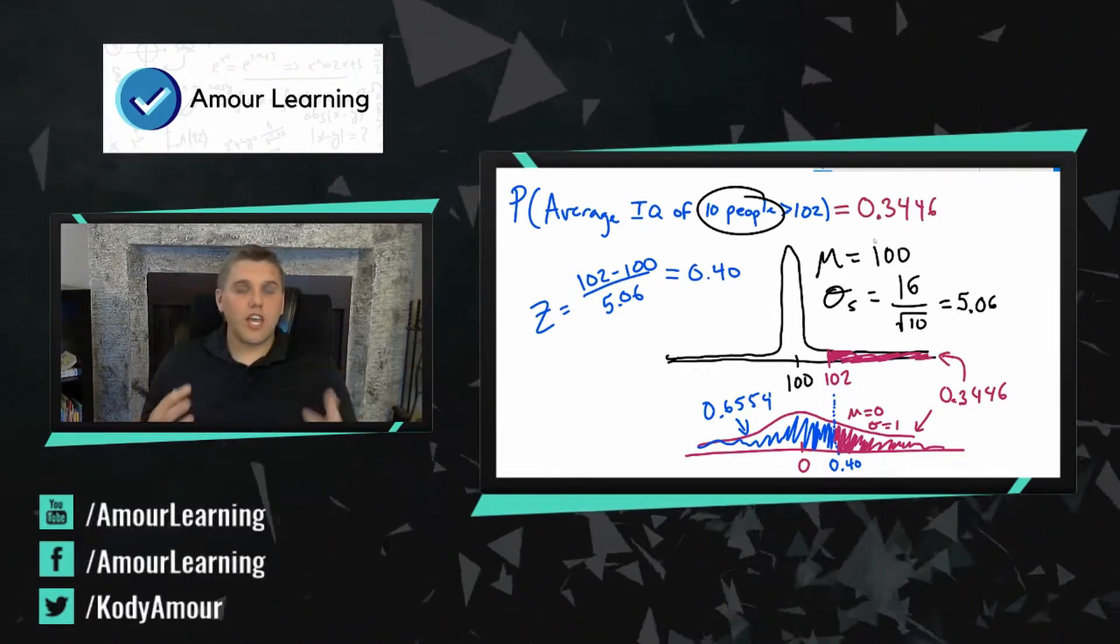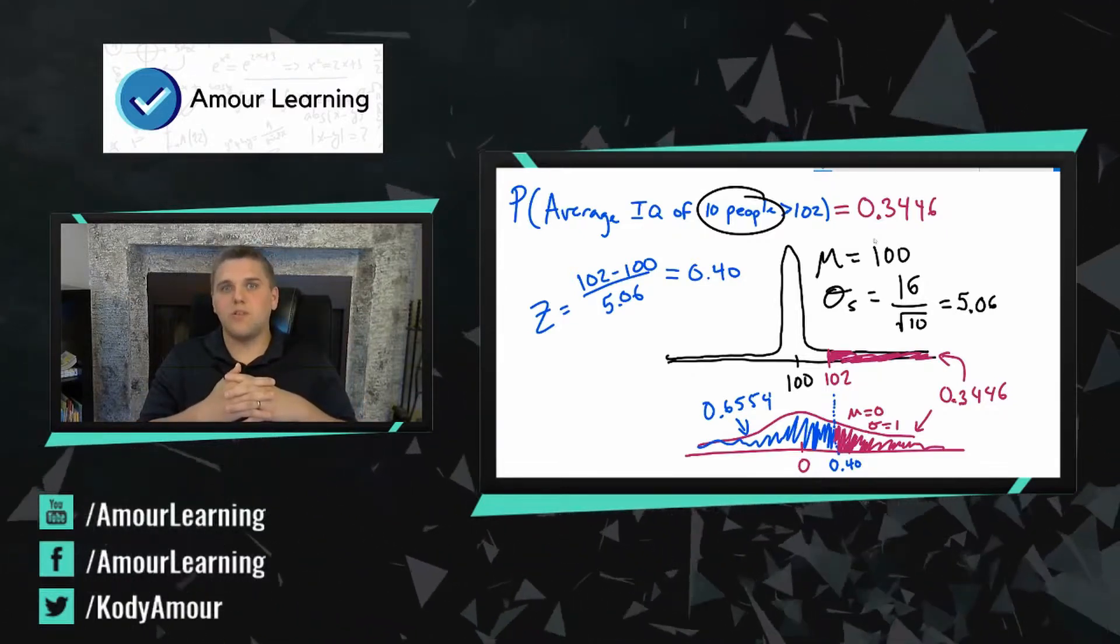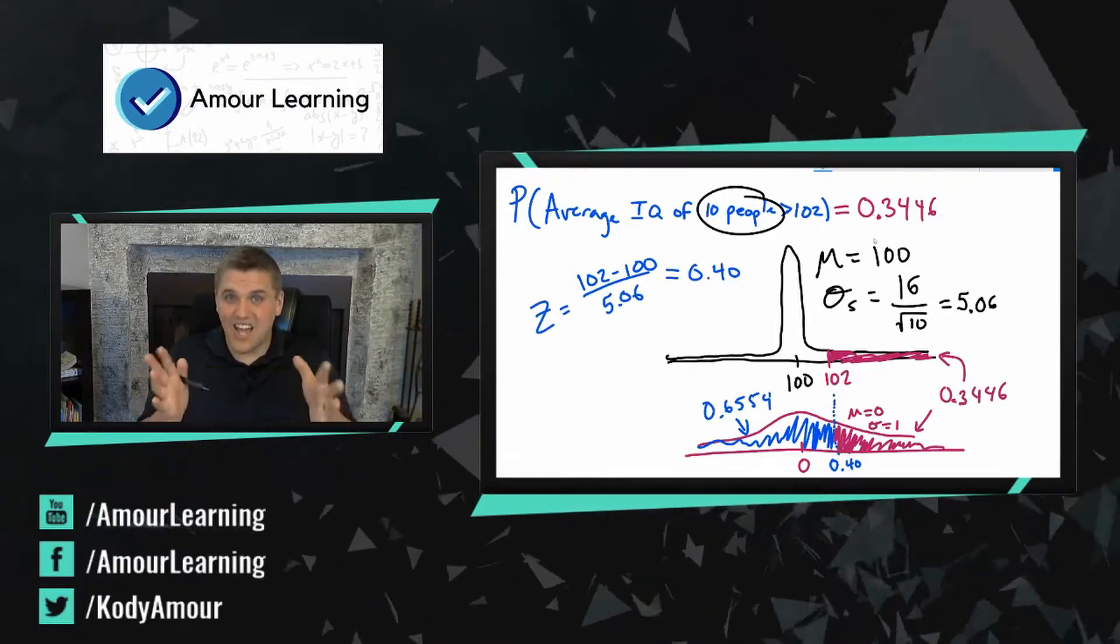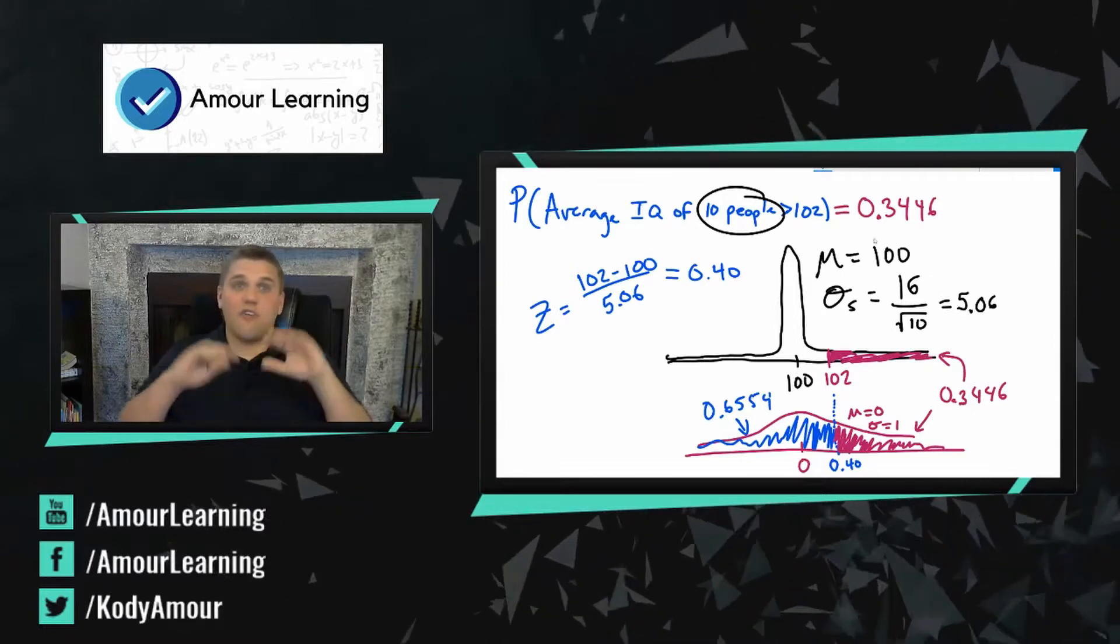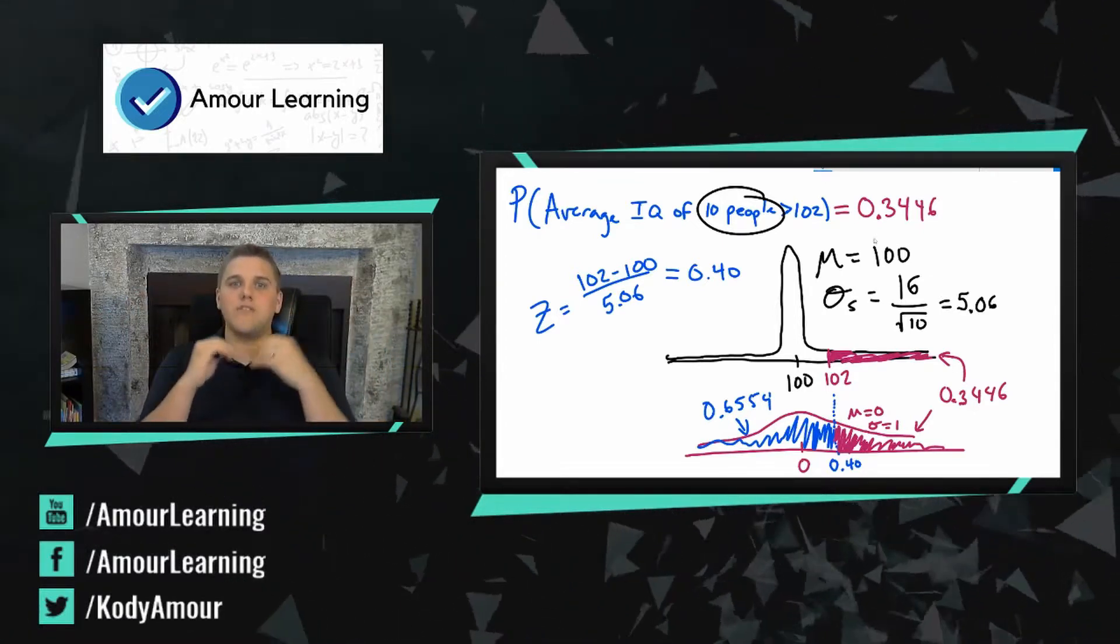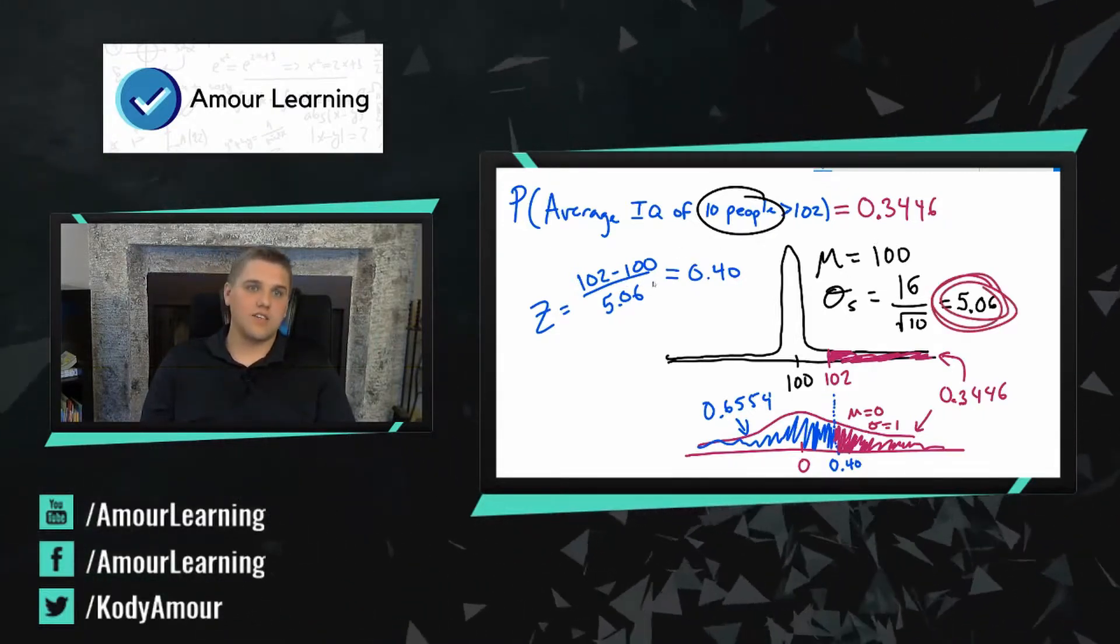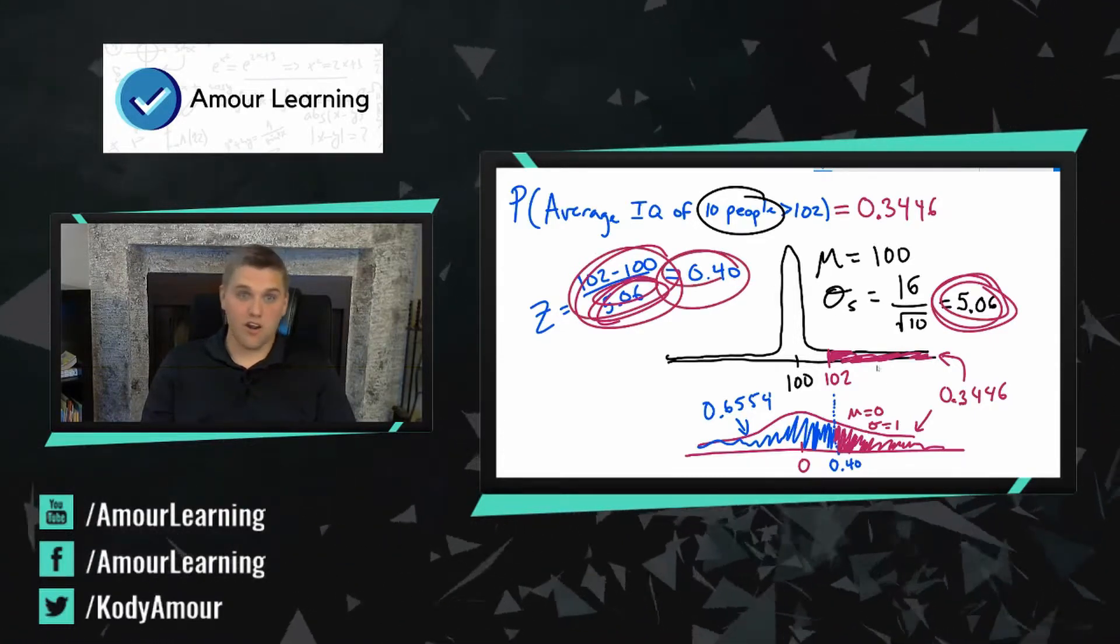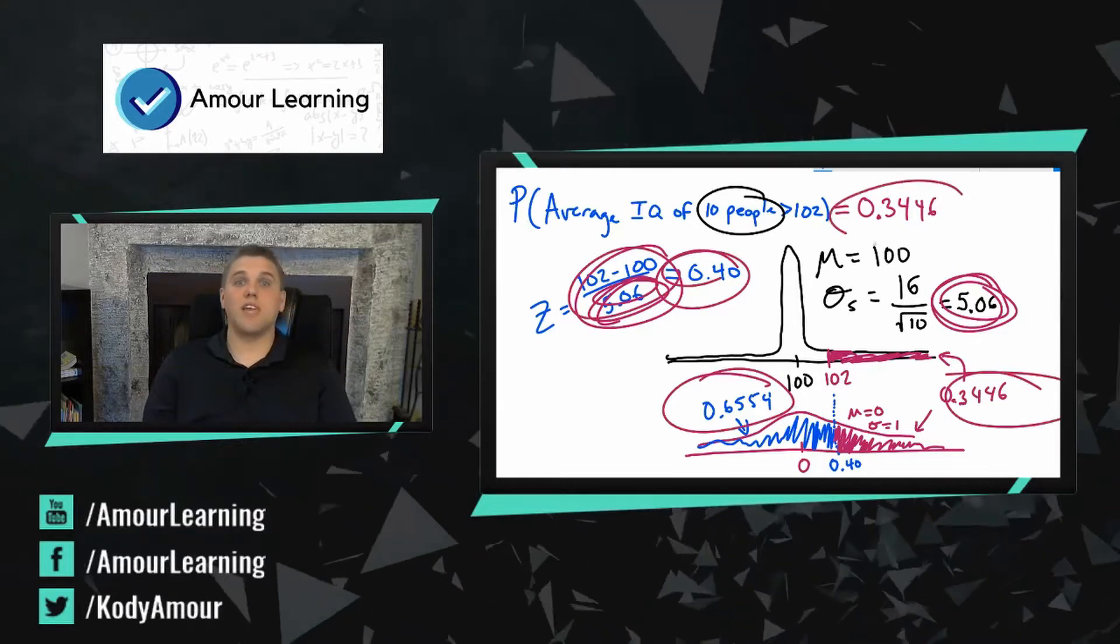So it's kind of unlikely to find that the average IQ of 10 people is greater than 102. That's slightly unlikely. The probability is exactly 34 percent. Now if we took like 100 people, this number would be even smaller because this standard deviation would be smaller, making this number smaller, making this z-score bigger, making this area bigger, making that area smaller, making that answer smaller.